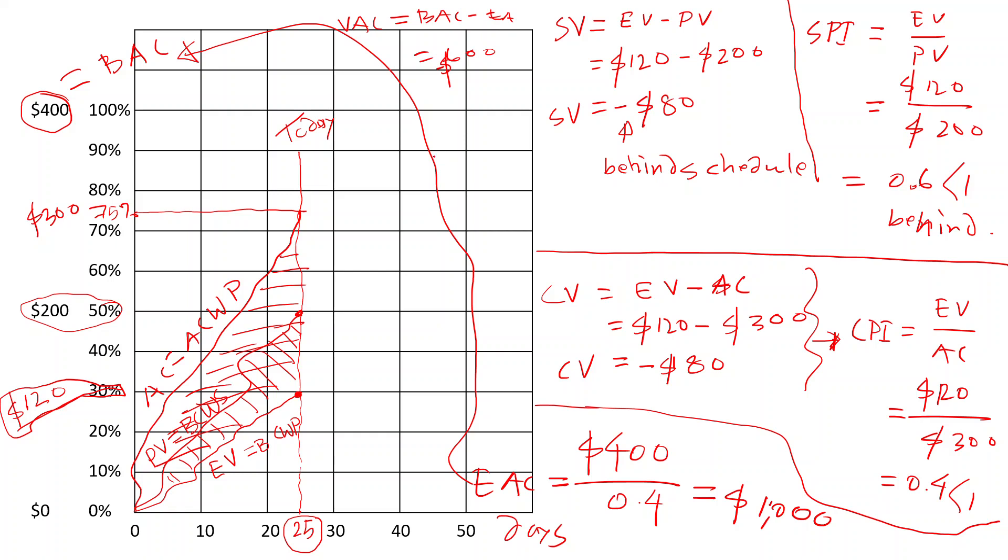Generally in the question, you'll be given this actual cost AC, PV, and EV, and you'll be asked to basically find out this schedule variance, cost variance, also the schedule performance index, cost performance index, also the variance at the completion.